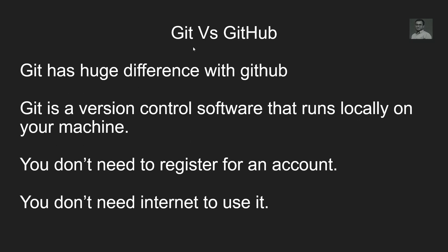Now let's look at the difference between Git and GitHub. Git is a distributed version control software that runs locally on your machine. Everything we have learned about Git commands so far was done on our local machine only — no internet is necessary. There is no registration or account needed. You just install Git on your system and you can initialize a Git repository in your application.